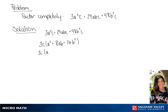We know that a squared and 16b squared are both perfect squares, so this will give us a plus 4b. So fully factored, we get 3c times a plus 4b squared.